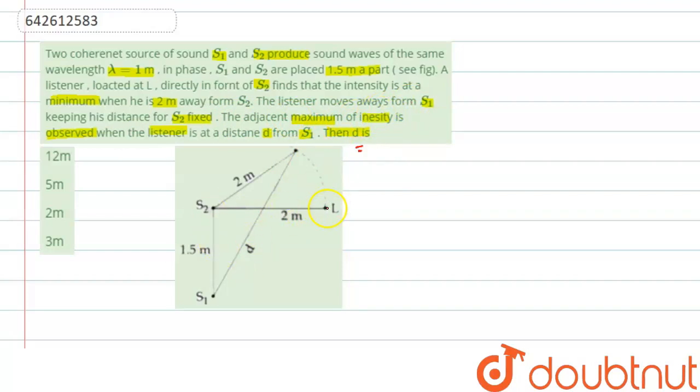So here we see that the listener was initially at this position, 2 meters distance from S2.